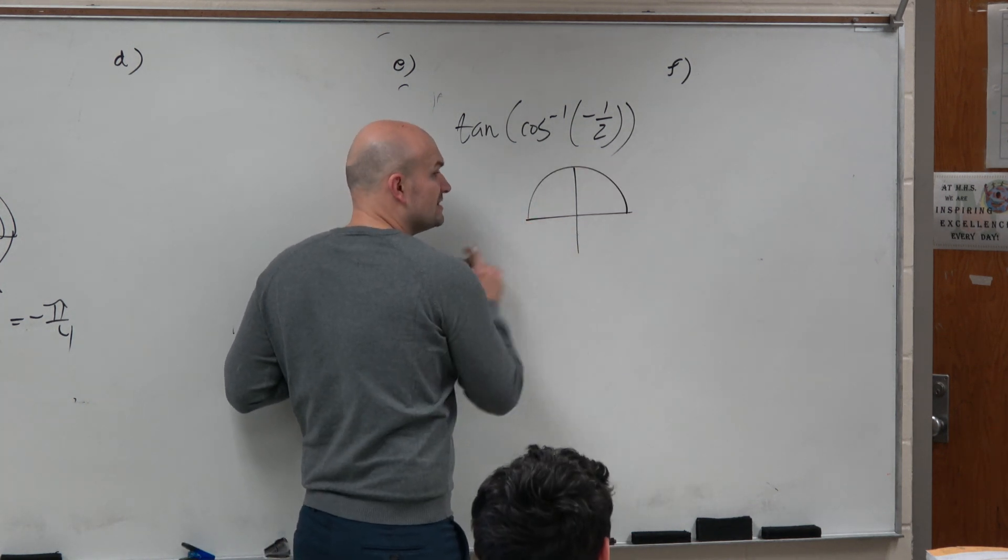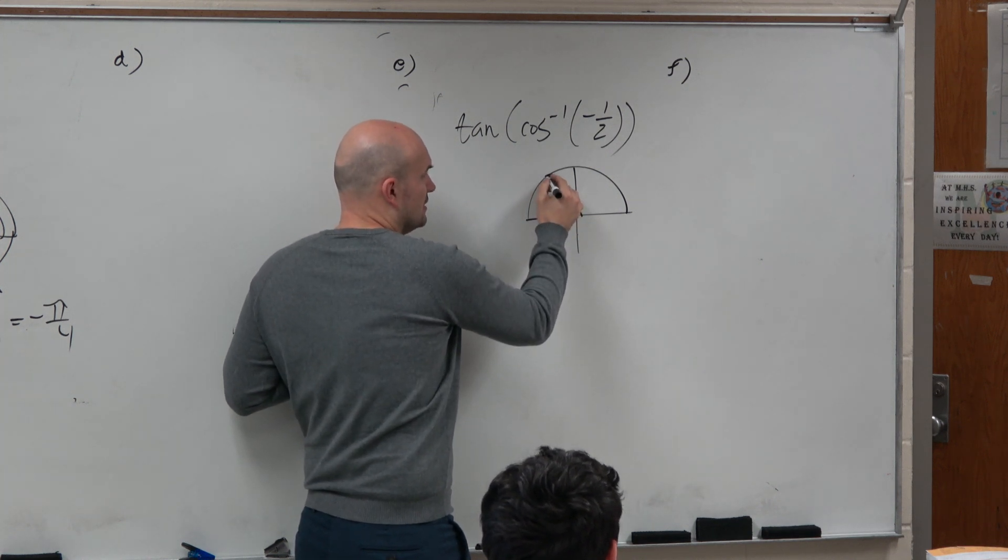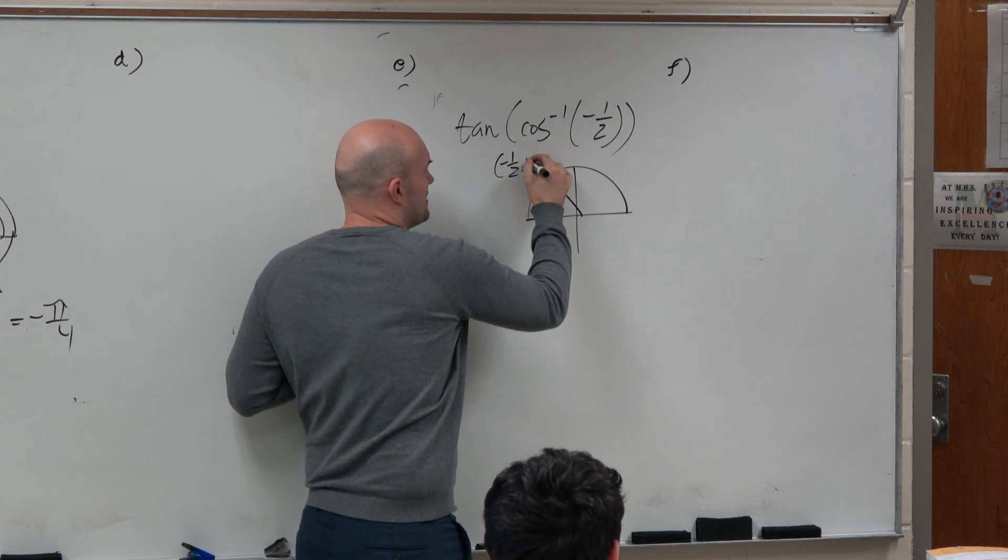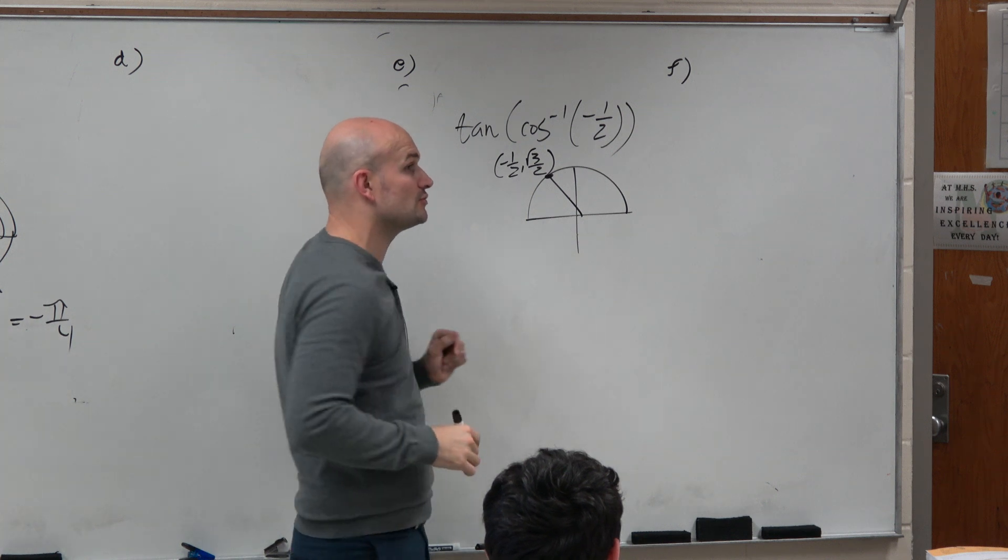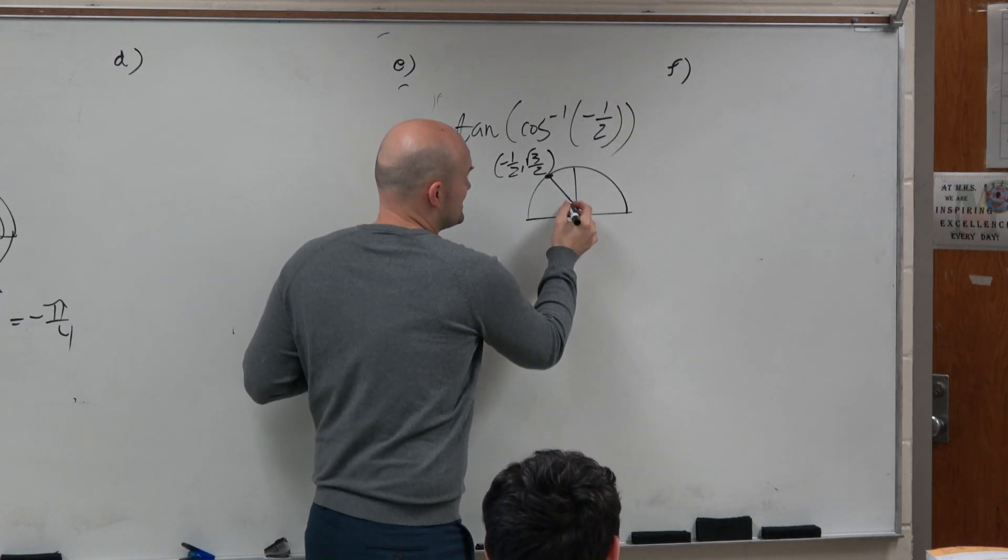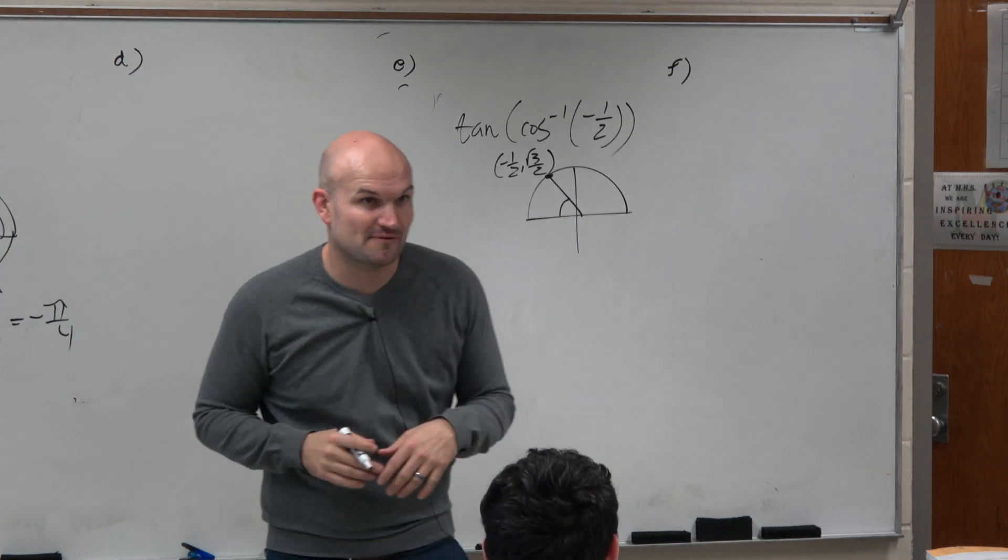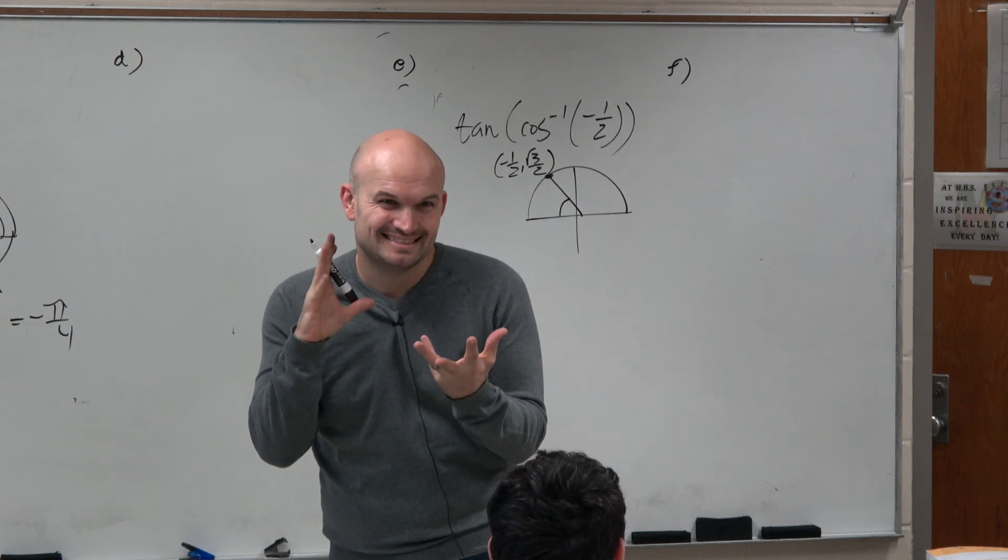So why don't we just keep it within the restrictions. So that coordinate point is negative 1 half comma square root of 3 over 2. I know my unit circle really well. So I know that this angle has a reference angle of pi over 3.